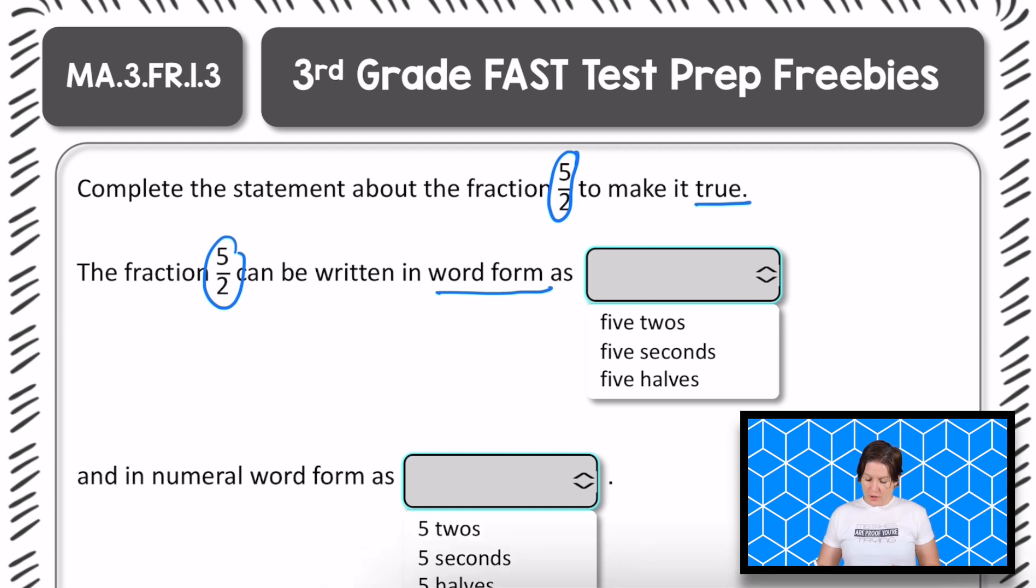So this fraction would not be five twos. It would not be five seconds, but it would be five halves. So we would click this little drop down menu in order to present those answer choices. And then we would select five halves.